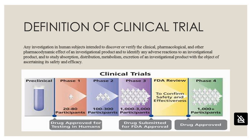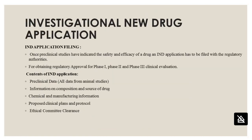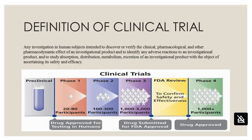You can see a diagram provided here showing the clinical phases: phase 1, phase 2, phase 3, FDA review and phase 4. It shows the drug approved for testing in humans, the drug submitted to the FDA, followed by the drug approved.